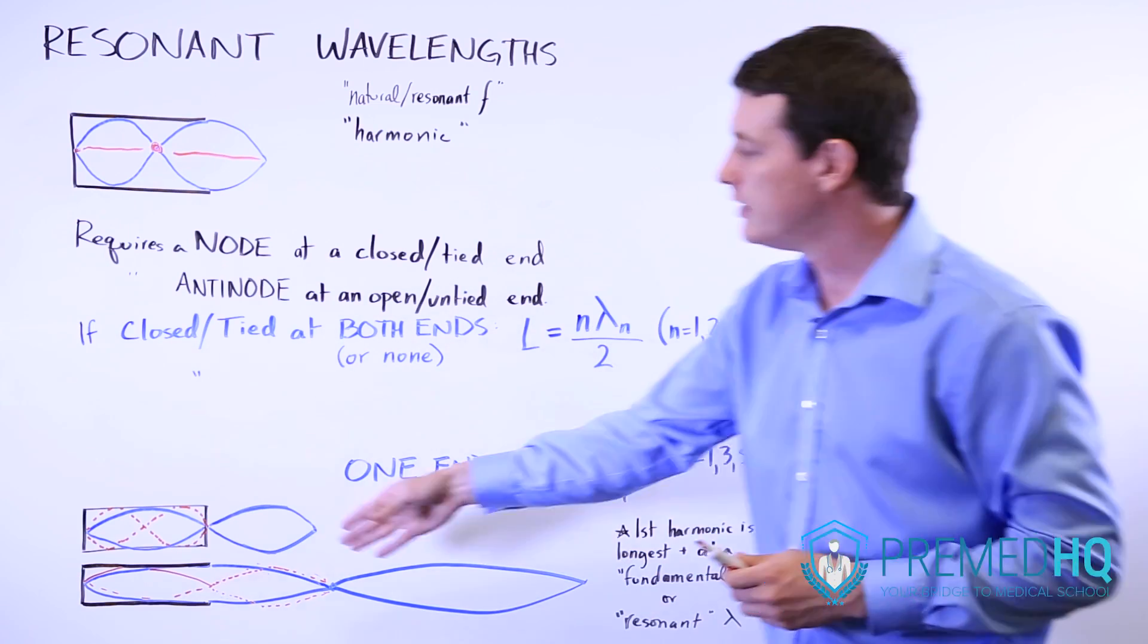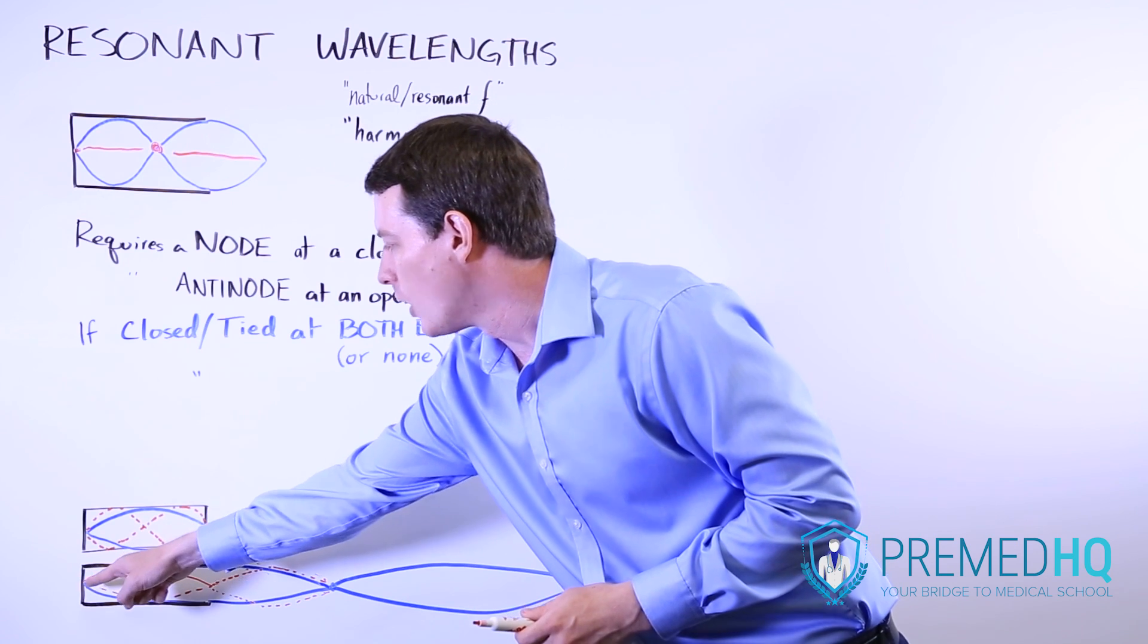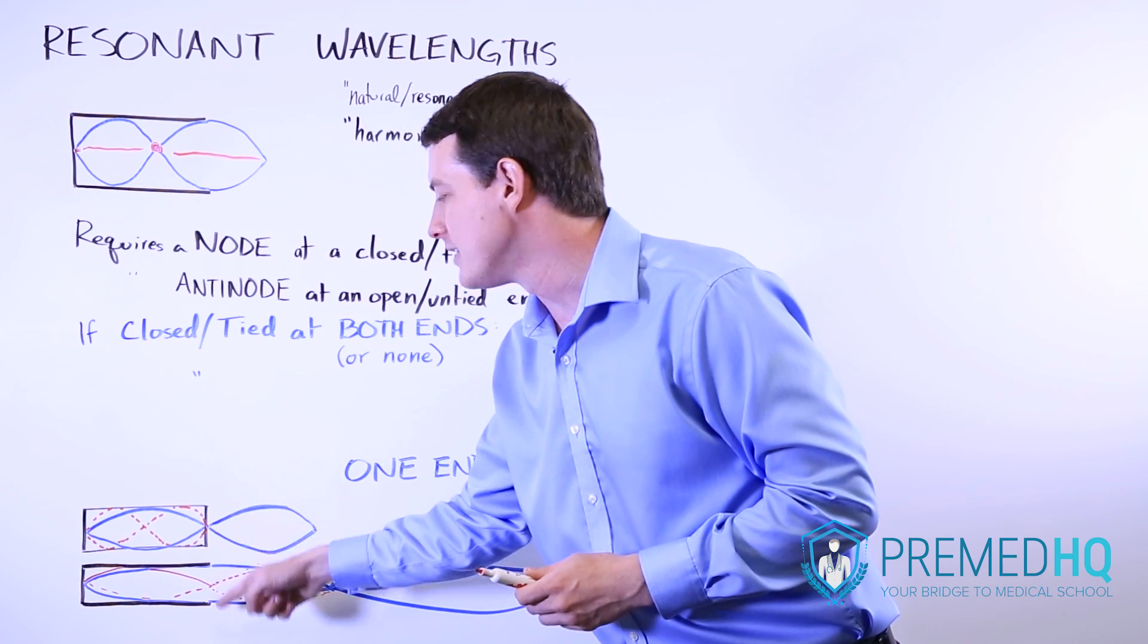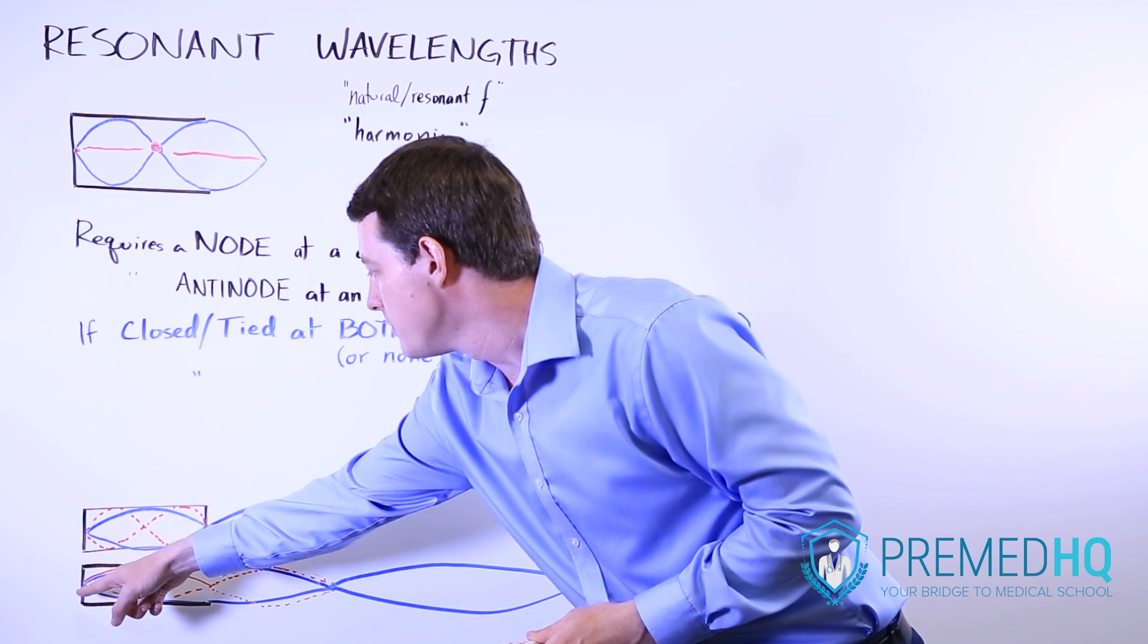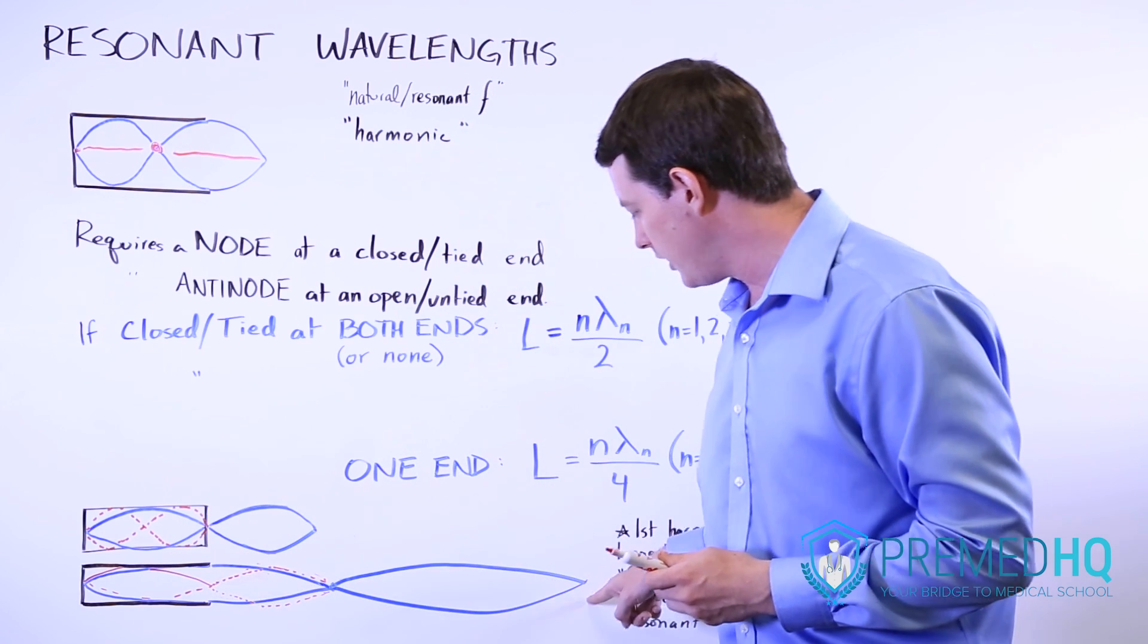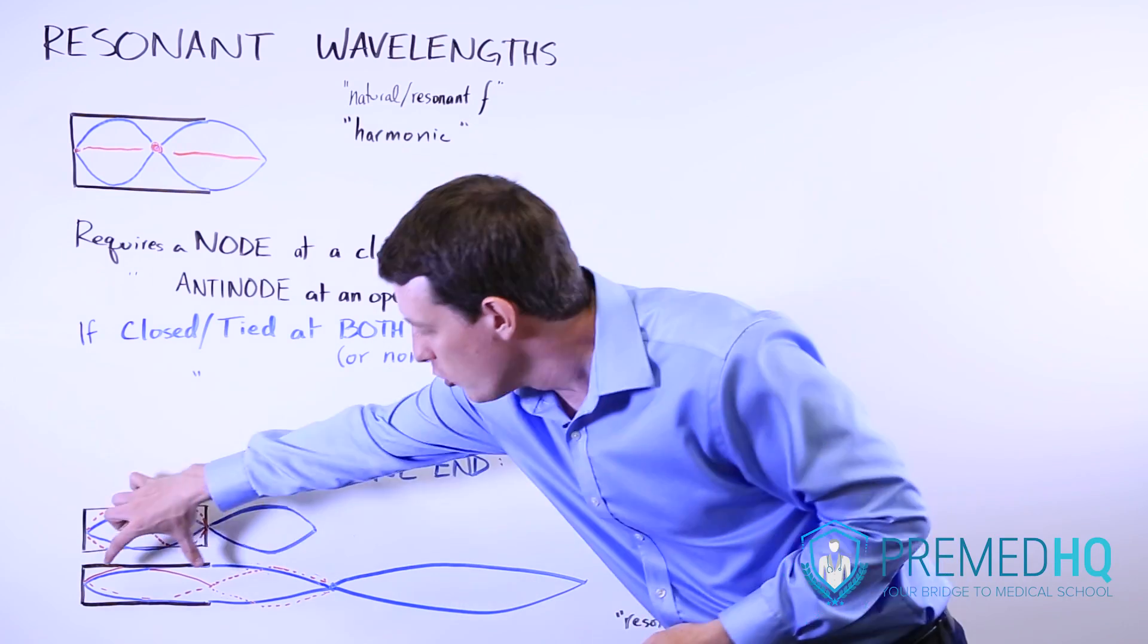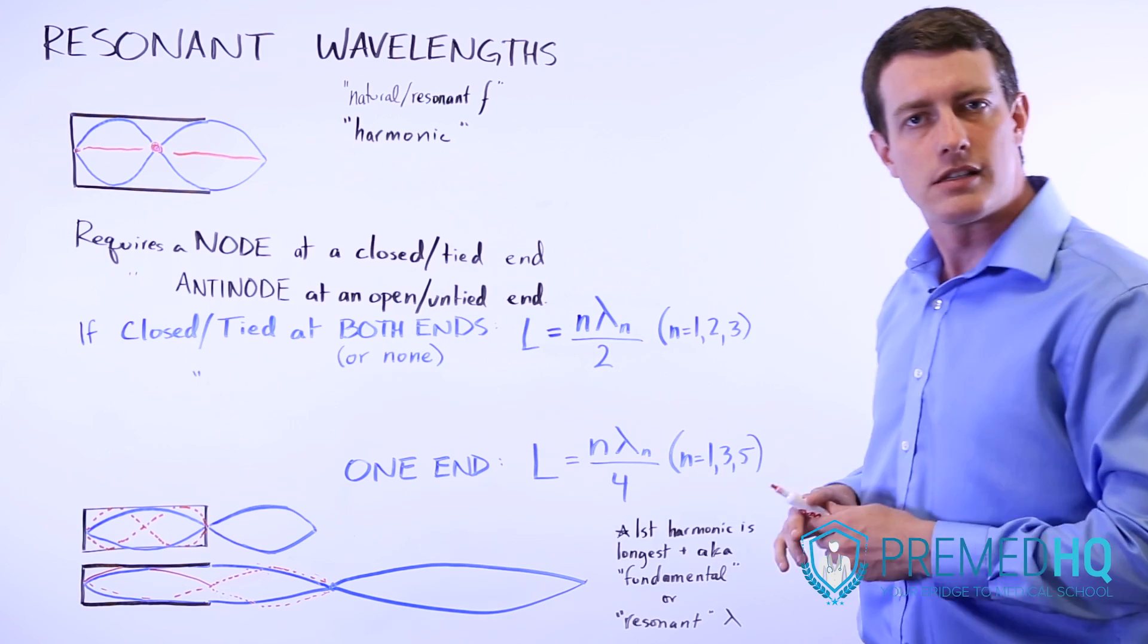Now notice that down here in this example where it is open at this end, the first one that satisfies the requirement of having a node here and an anti-node at the open end is going to be a wave that rises to here, comes back to the middle, goes down here, and then reaches this position again.